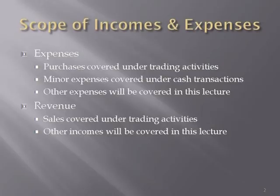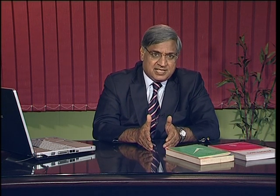On the other hand, minor expenses — small amounts — were normally paid in cash. We covered the cash transaction audit in lecture number five. Other remaining expenses will be covered in today's lecture as revenues, i.e., income. Revenue can also be divided into two parts: sales of goods, which is normal business and was covered in the previous lecture on trading activities, and other income such as rent income, commission income, or interest income — which we will cover in today's lecture.